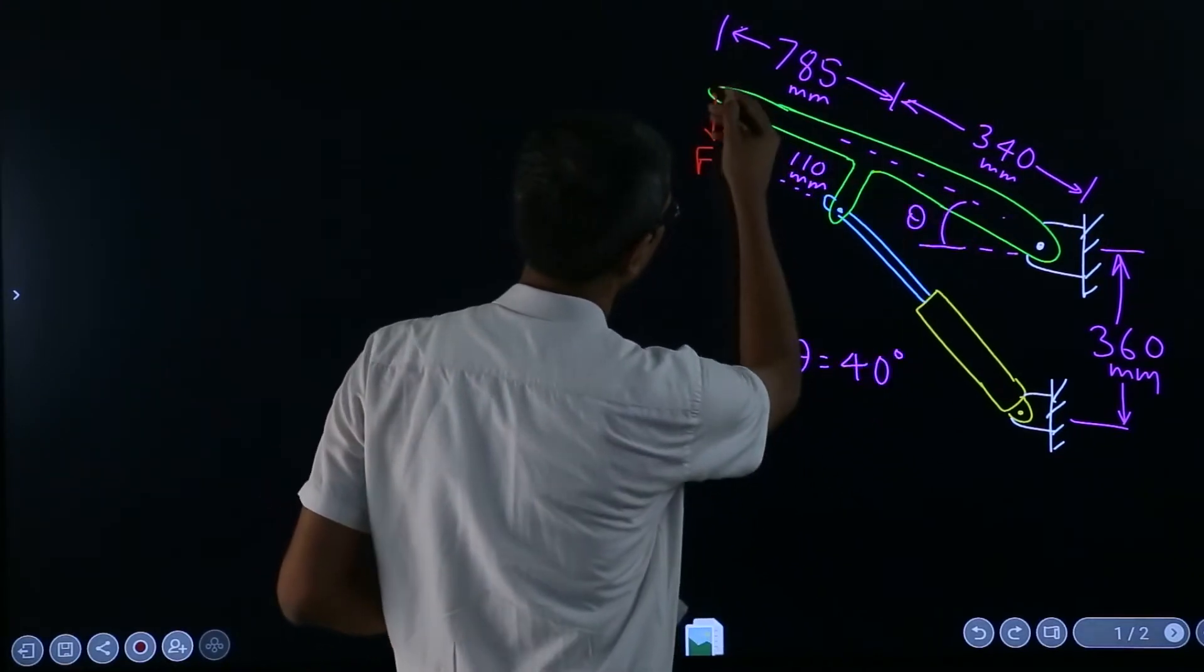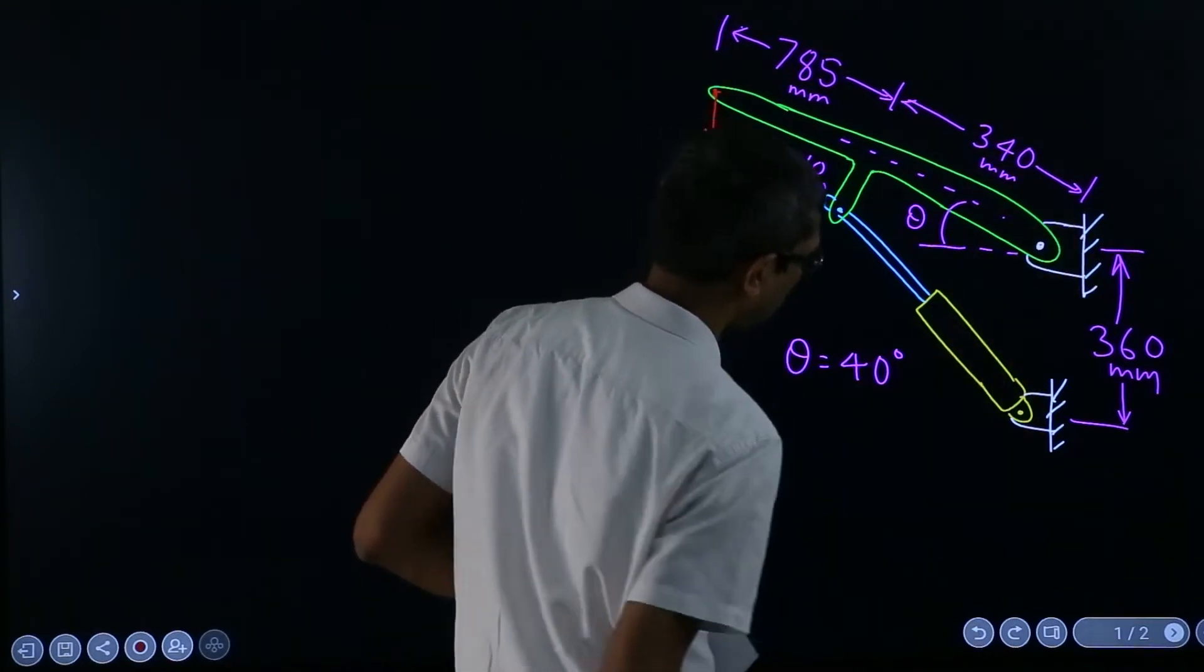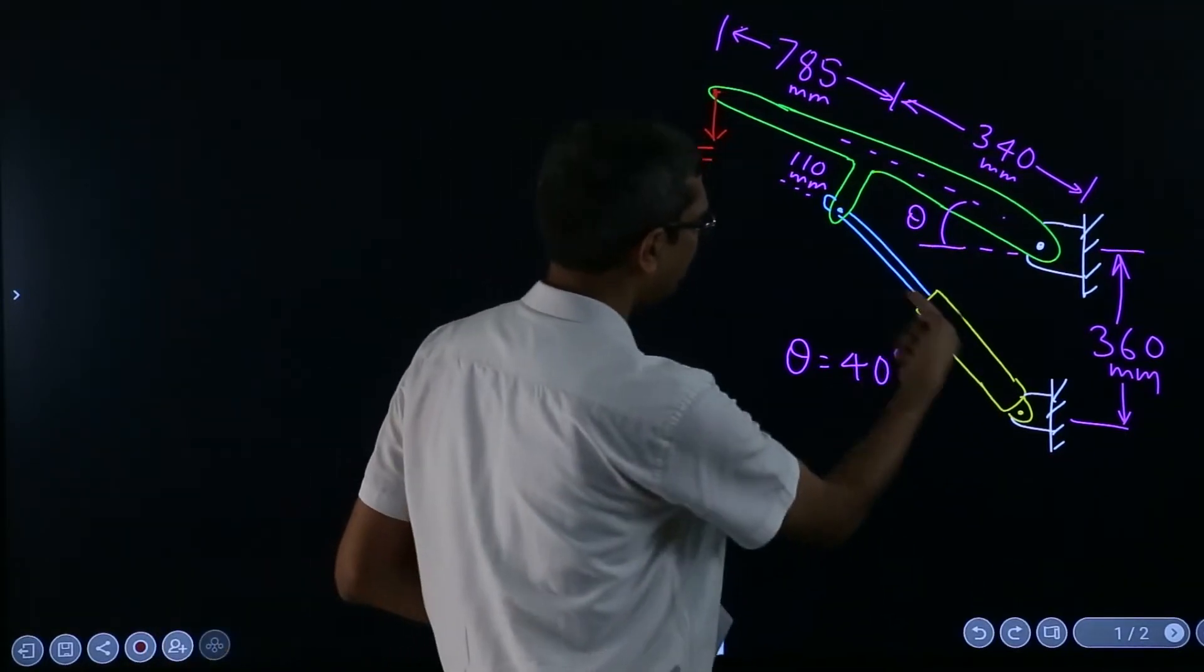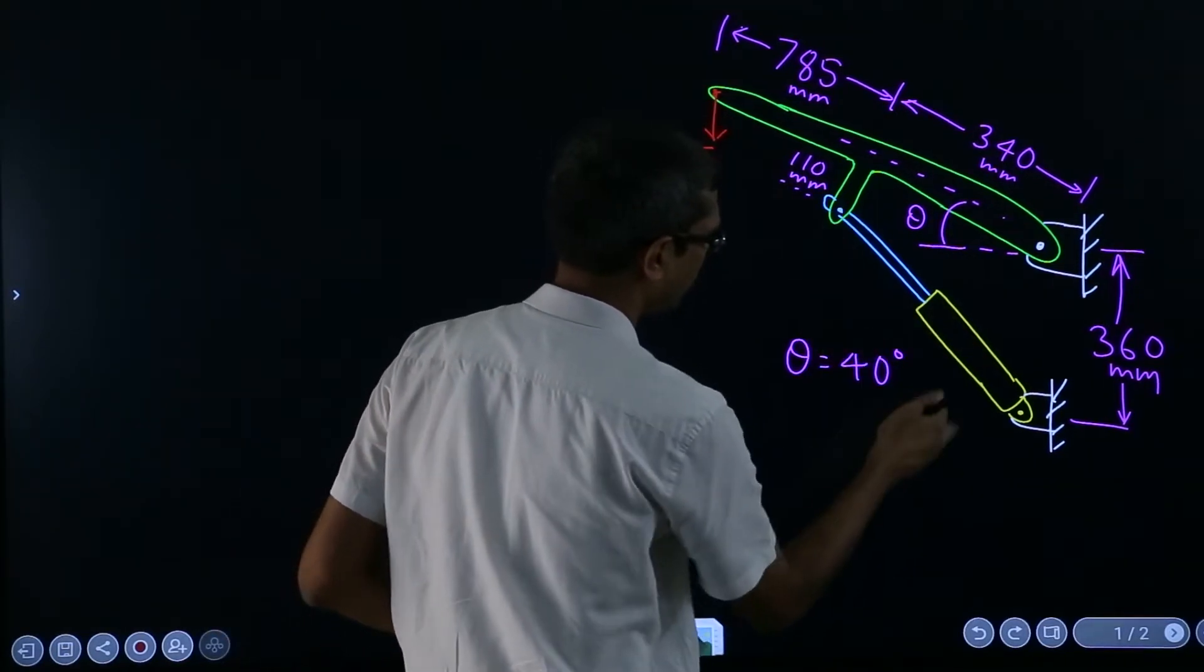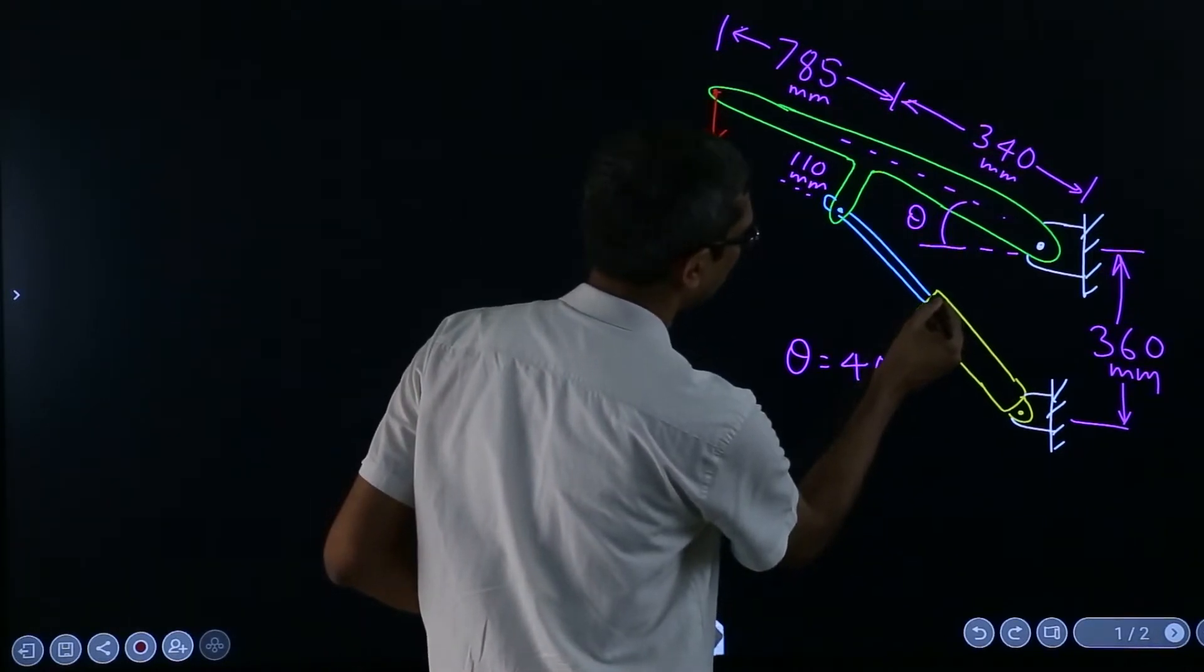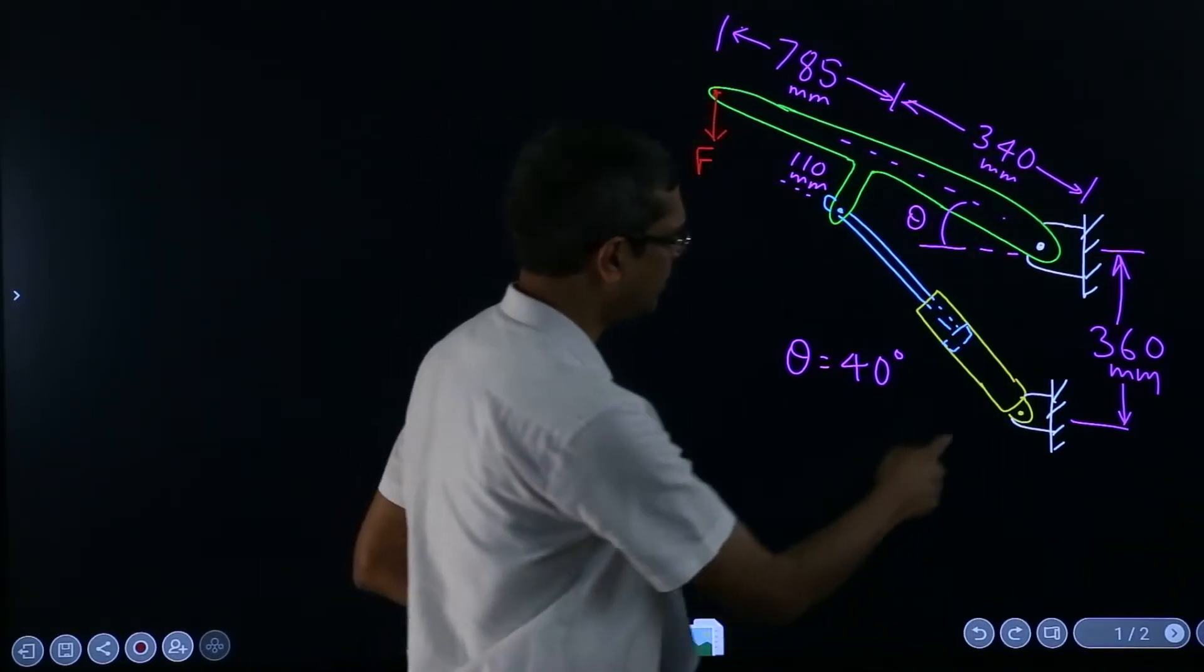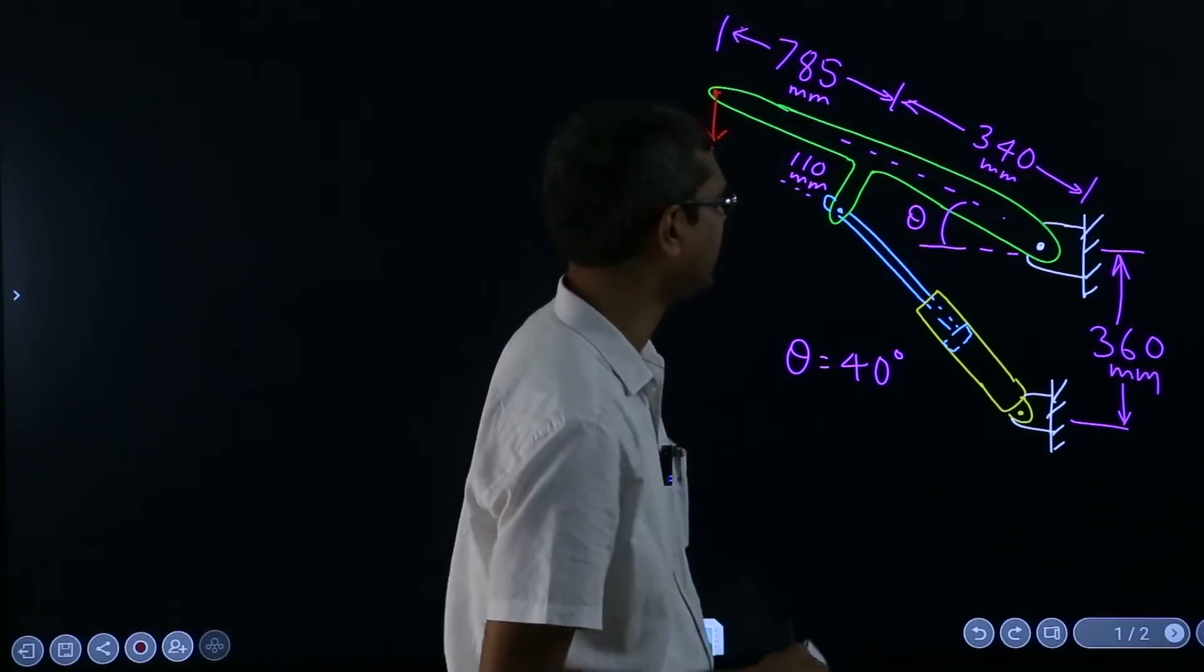There is a boom that can rotate about this hinge point, and then there is this hydraulic system which can apply a force in this direction. Either it can pull or it can push because if you see the internal construction, maybe some piston is here and liquid oil system is here, so if you push in oil then it can go there.